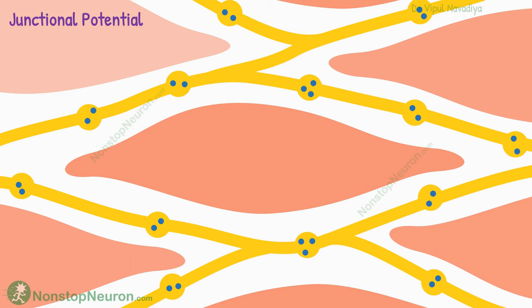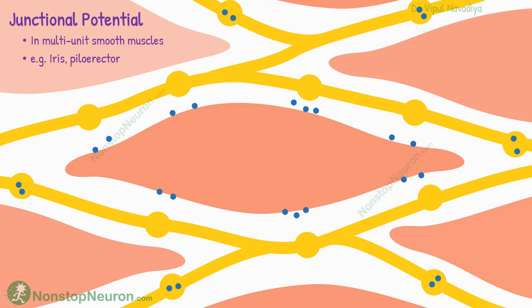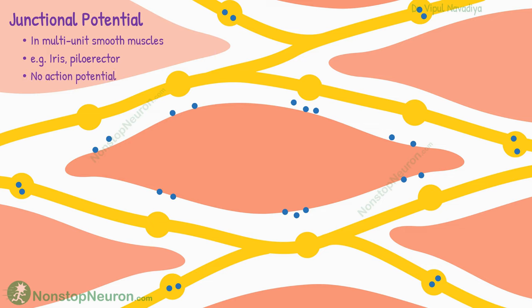Now let's talk about junctional potential. They are seen in multi-unit smooth muscles, like those in the iris and piloerector muscles of hair. Fibers in such muscles are very small in size to generate an action potential. In them, neurotransmitters are released close to the cell membrane and cause local depolarizations. This is called junctional potential. They are equivalent to end plate potentials seen in skeletal muscles. These potentials spread electrotonically in nearby areas, which is enough to excite the entire cell because of its smaller size. Thus, the action potential that spreads in a self-generative manner is not seen in such fibers.